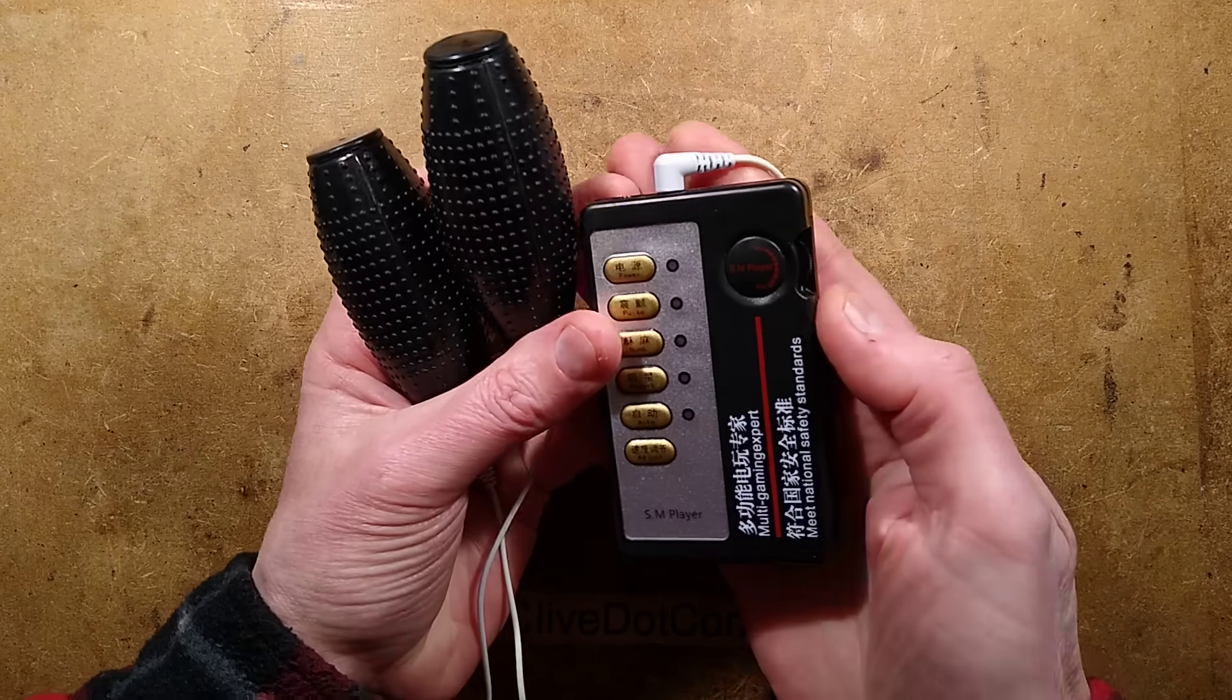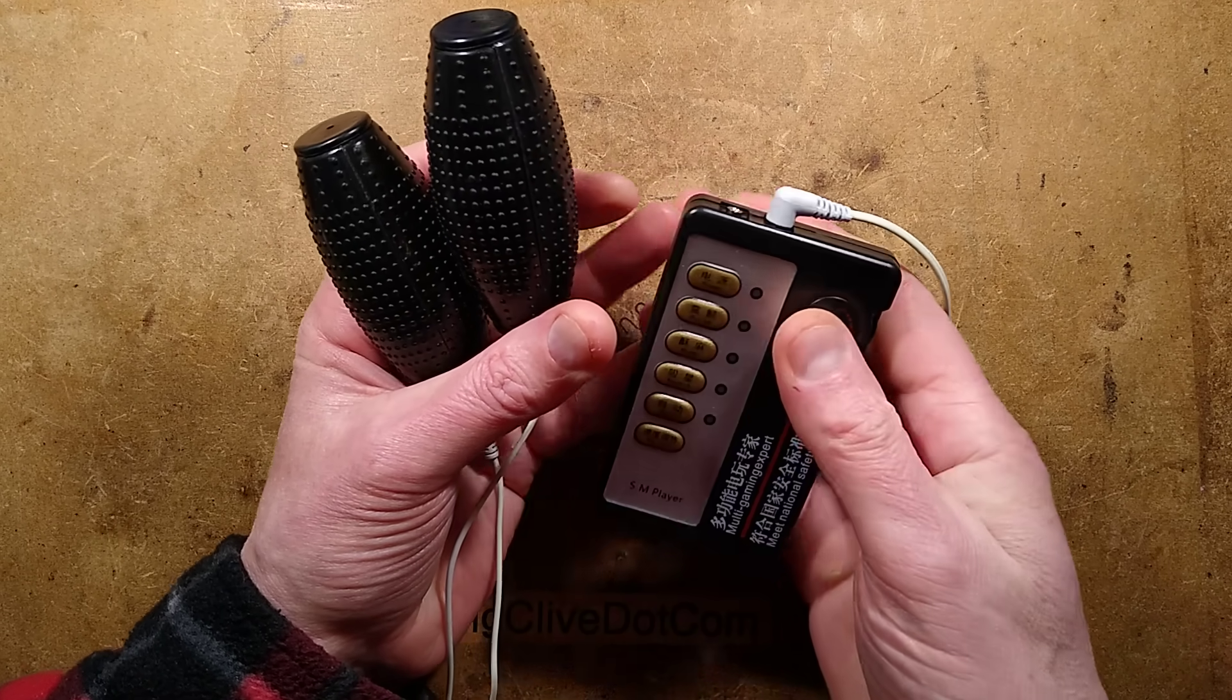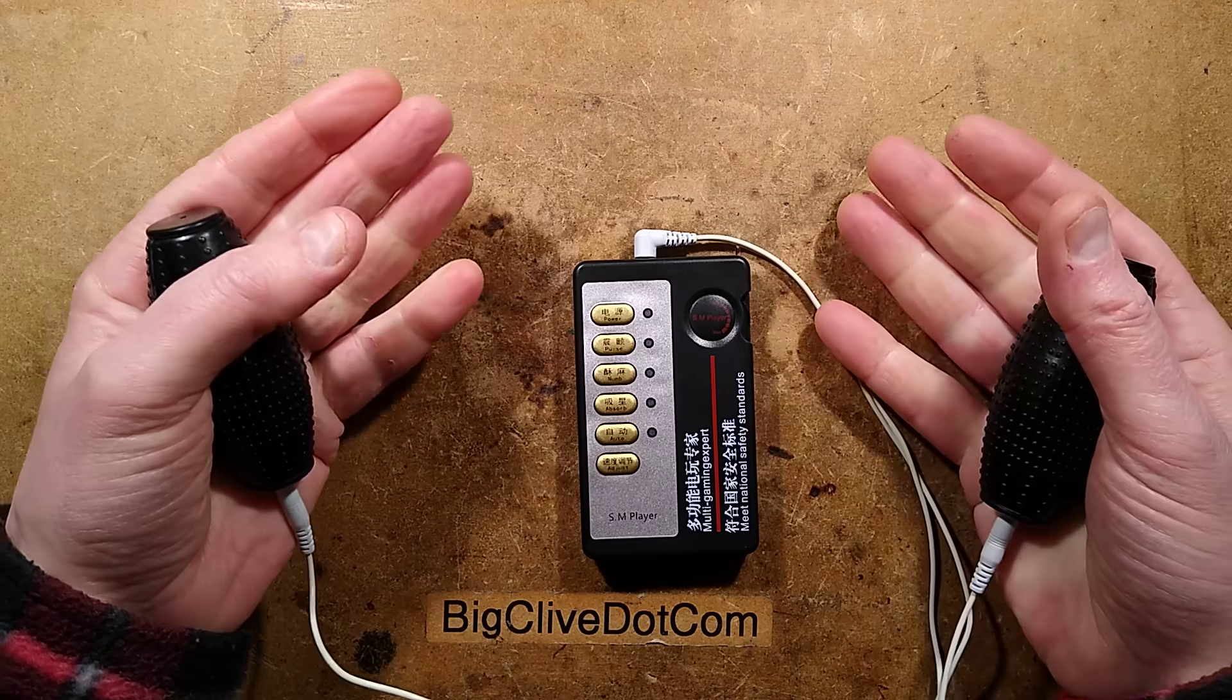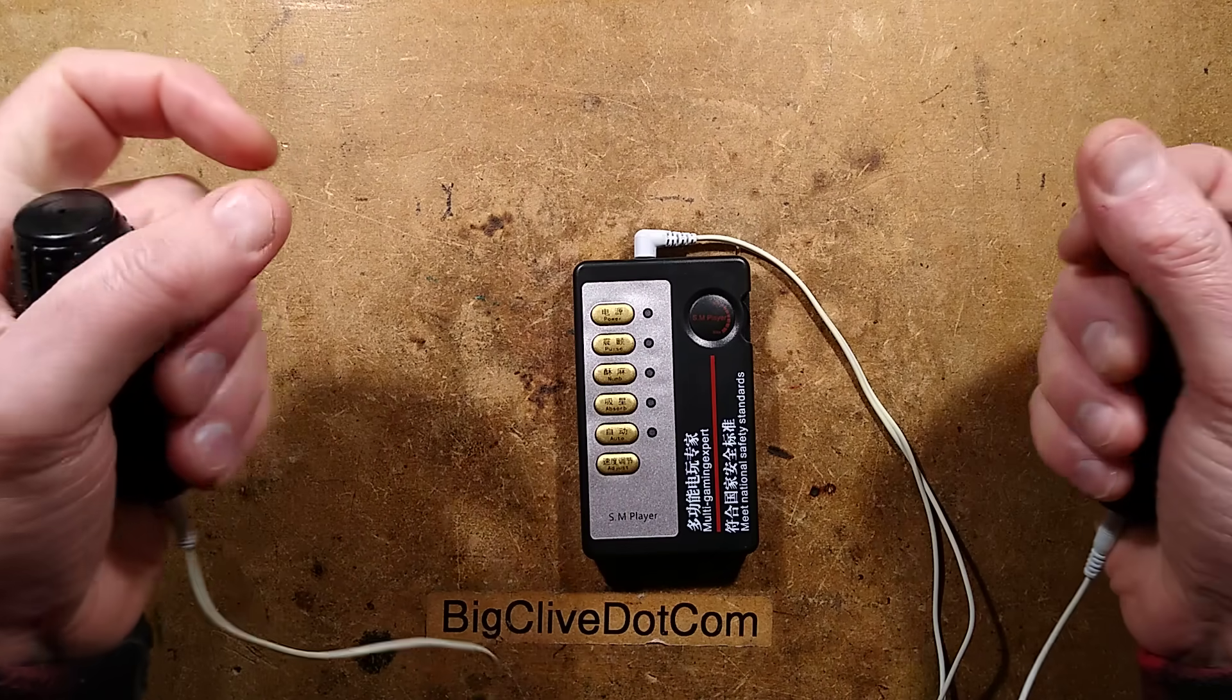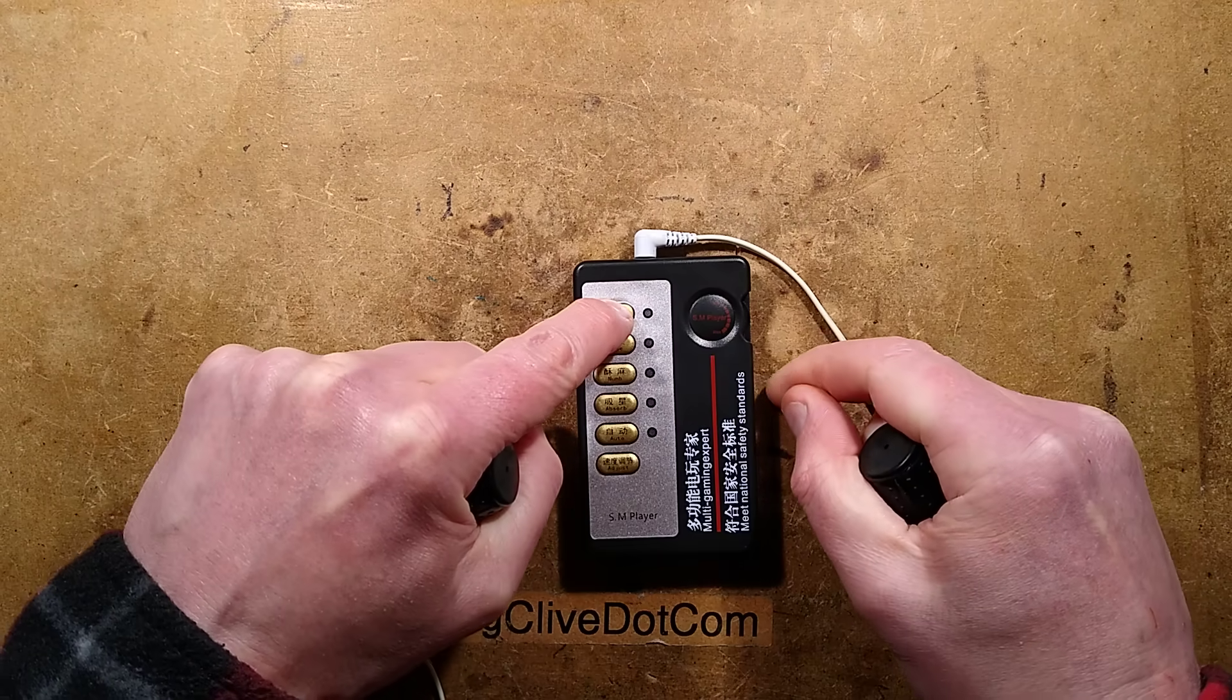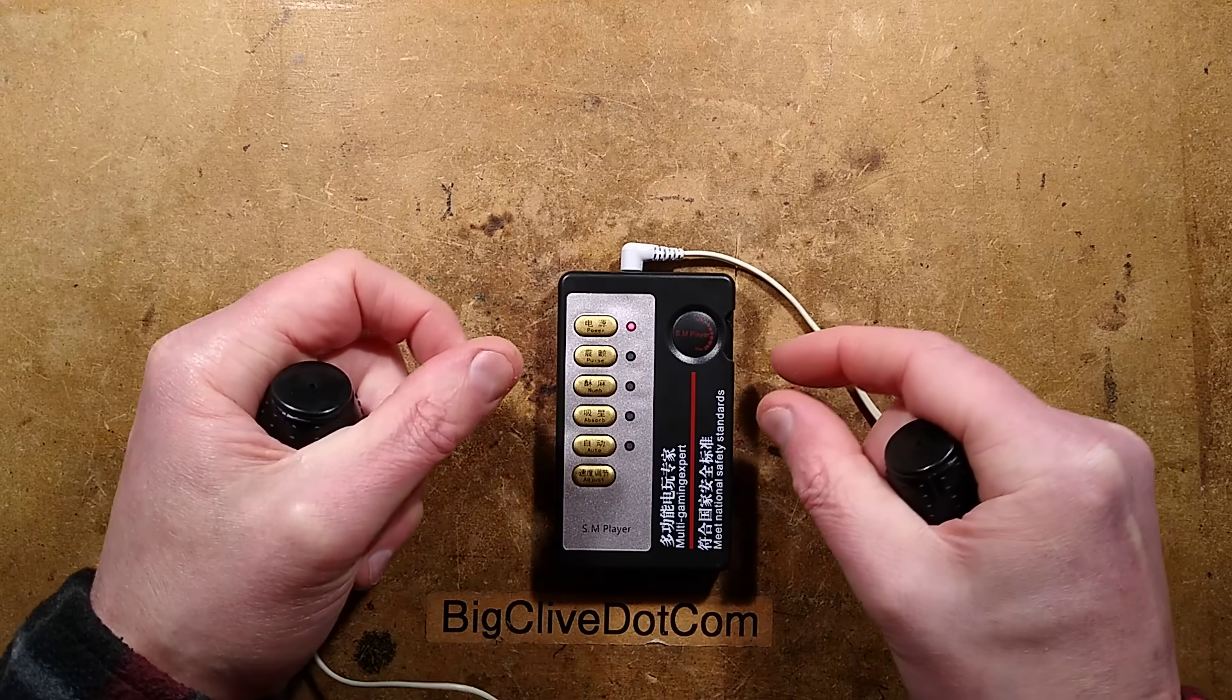It has a little volume control knob at the side here. Make sure it's pushed all the way up. Do not turn it on with it all the way down - it's not very clear, but make sure it's all the way up, otherwise you're going to have a very bad experience. Then, holding the electrodes, I shall push and hold that to activate the power. A little red LED is lit down here. And then I shall select pulse. I immediately feel that.